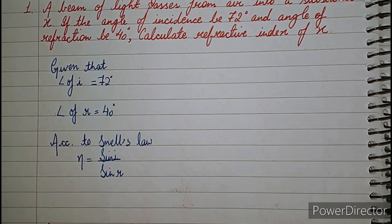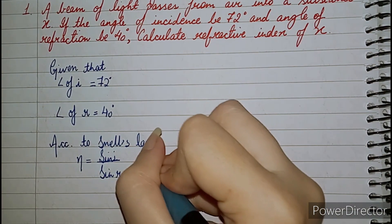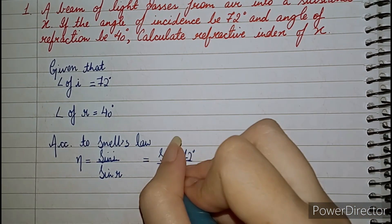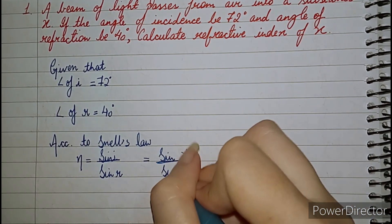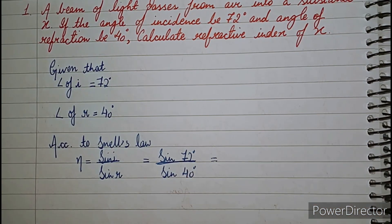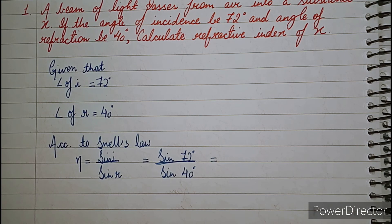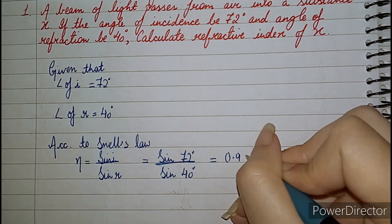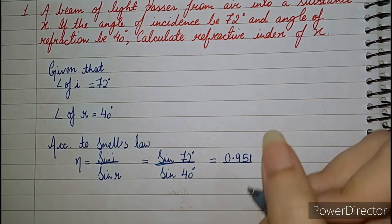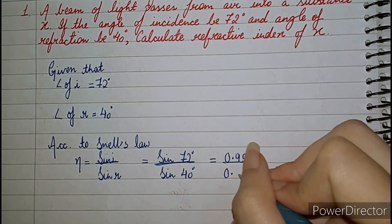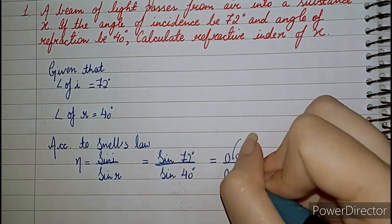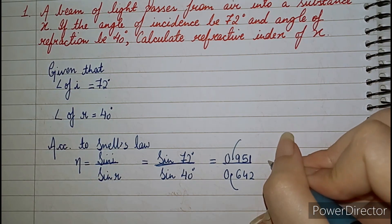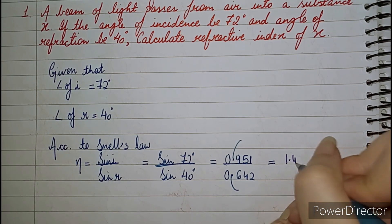So sin I upon sin R — that is sin of the angle of incidence — sin 72 degrees upon sin 40 degrees. The values of sin which are complicated and not in your maths portion will be given to you. Sin 72 degrees is 0.951 and sin 40 degrees is 0.642. Since the decimals are at the same place, we cut them and divide to find that the refractive index is 1.48.